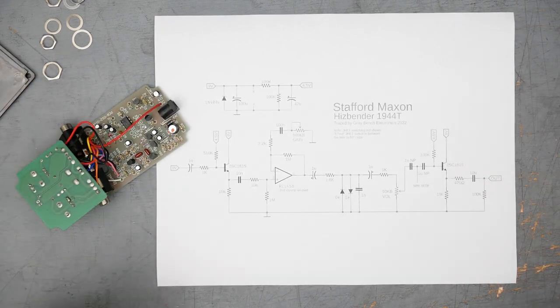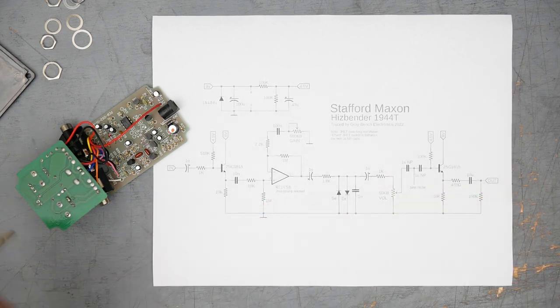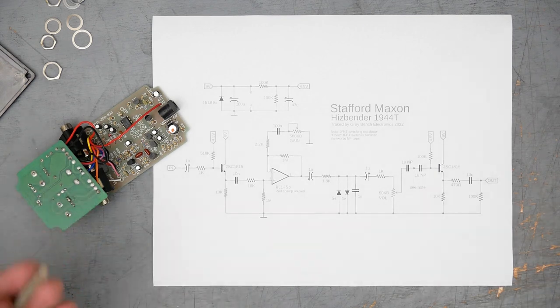It is, like I said, a distortion plus with input and output buffers. I did not show on this schematic the JFET switching. It is a standard Maxon Ibanez JFET switching.